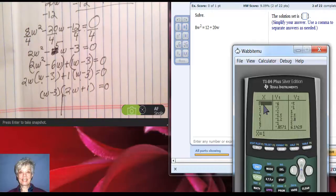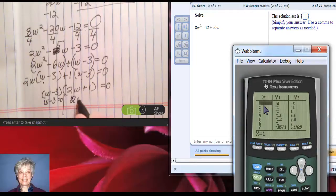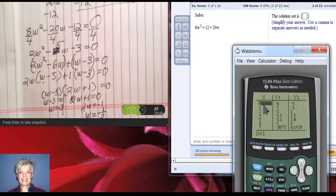Then I set each factor equal to 0 and solve for w. w - 3 = 0. 2w + 1 = 0. So w = 3. And 2w = -1, and divide by 2 on both sides. So I'll have w = -1/2. And those should be my answers.